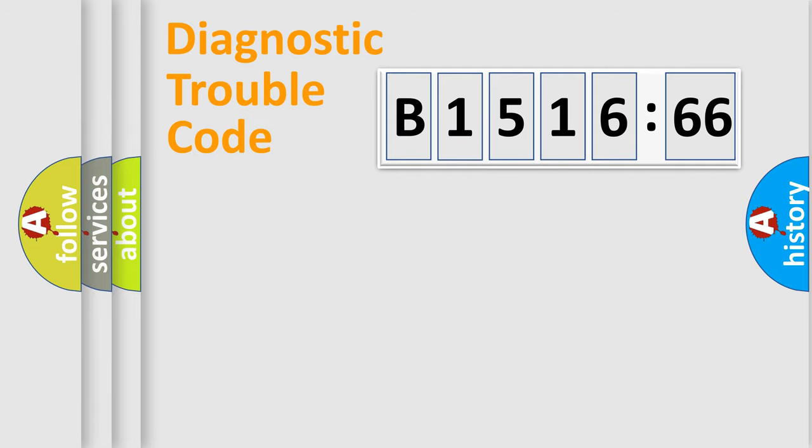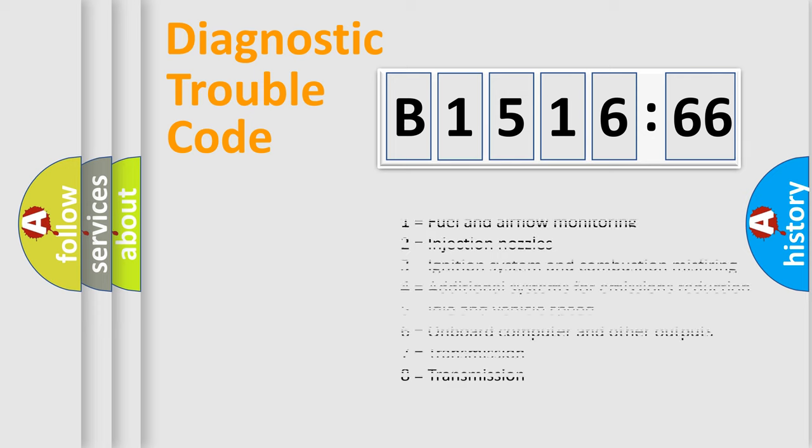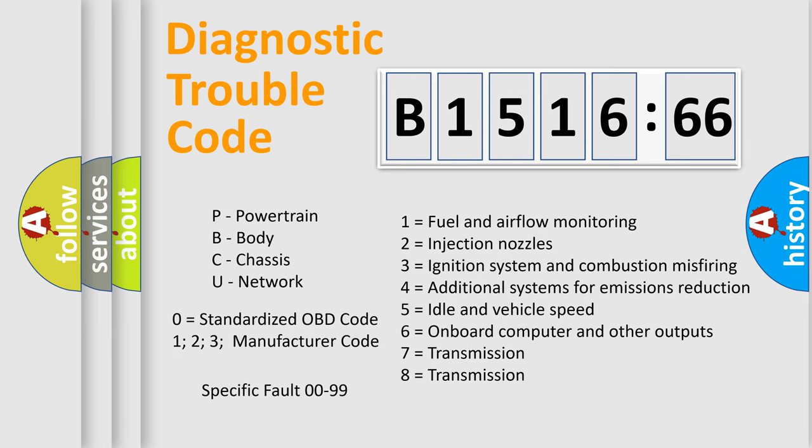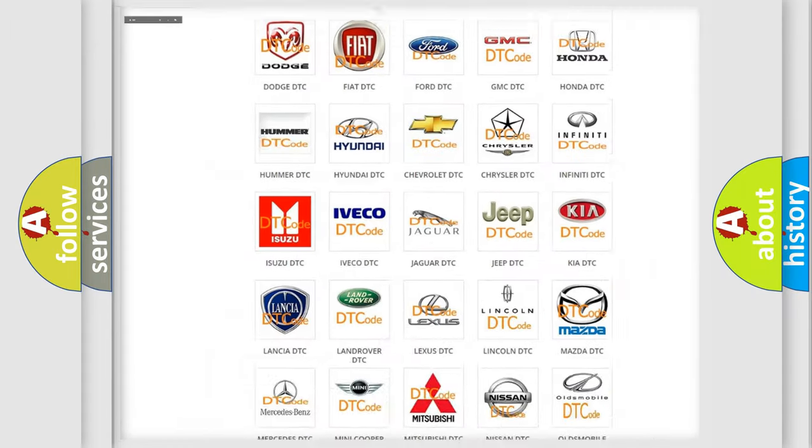The third character specifies a subset of errors. The distribution shown is valid only for the standardized DTC code. Only the last two characters define the specific fault of the group. The add-on to the error code serves to specify the status in more detail. For example, a short to the ground. Let's not forget that such a division is valid only if the second character code is expressed by the number zero.